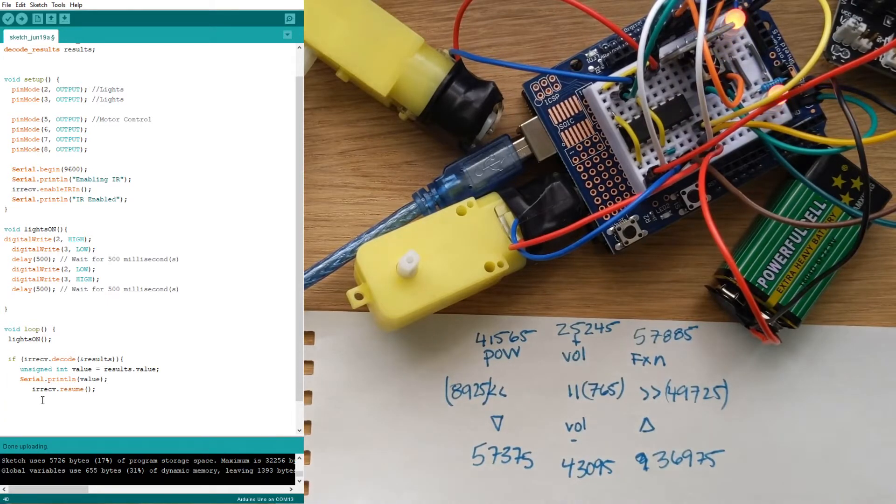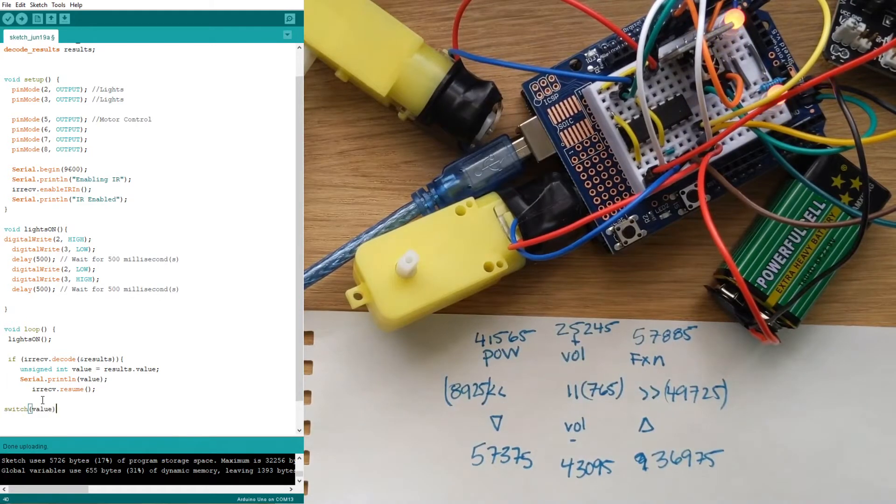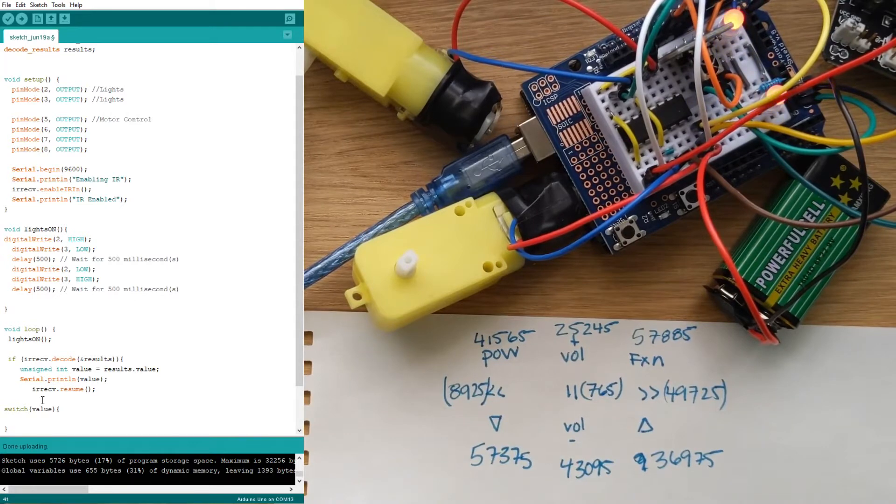The way that we start checking our values is we open up a thing called switch value and that is gonna have its own open curly bracket and now we can write cases.